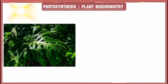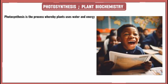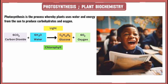Welcome to the Biochemistry Academy. In today's video we'll talk about photosynthesis. As we learned in our early school days, photosynthesis is the process by which plants use water and energy from the sun to produce carbohydrates and oxygen.